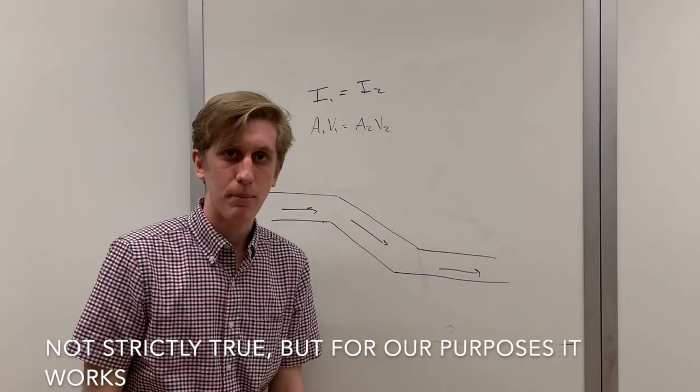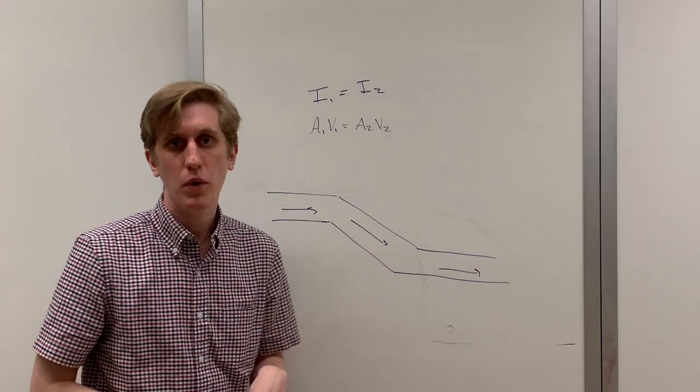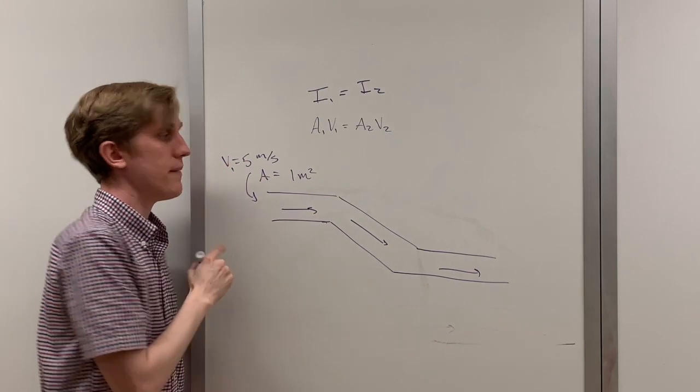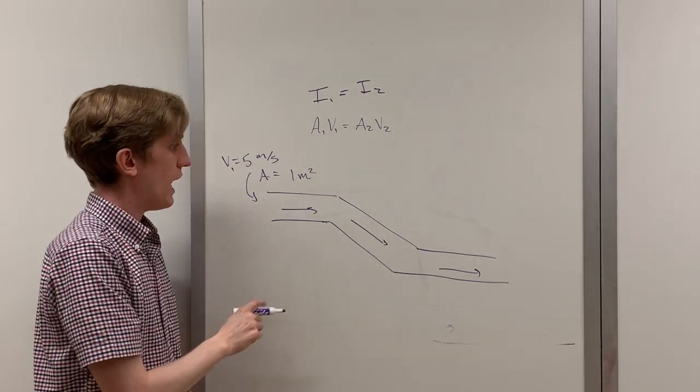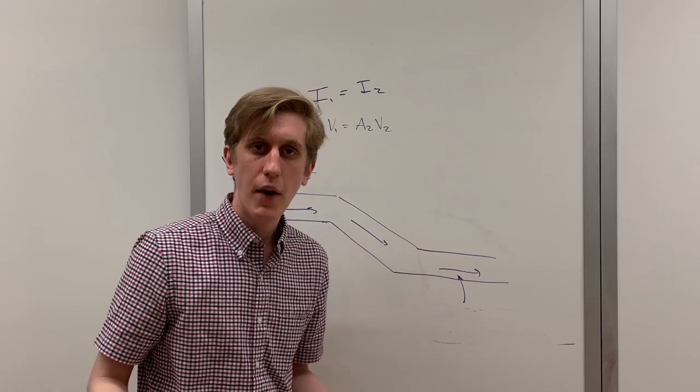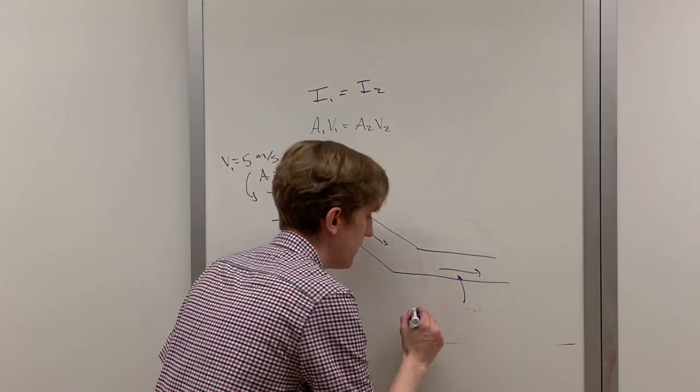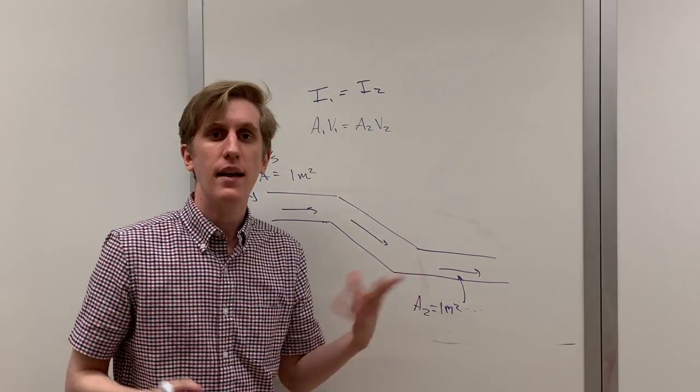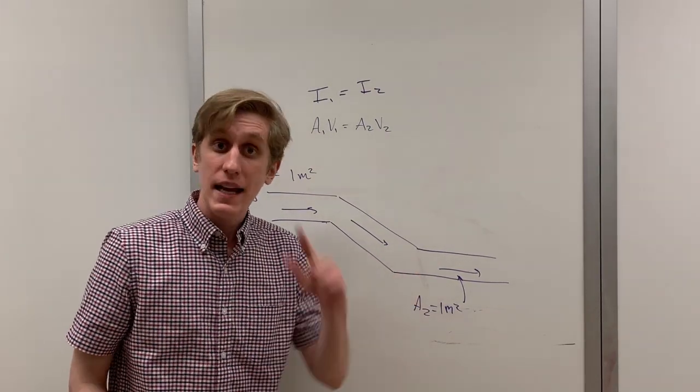So let's do an example. Suppose this is a pipe with water flowing through it. The speed of the water is five meters per second, and the area is one meter squared. At the bottom of the pipe, the area is still one meter squared. The question is, how fast is the water traveling at the bottom of the pipe?